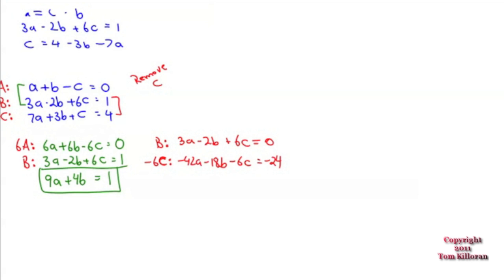Now do the same for the bottom two. To get rid of c, we'll leave B alone and multiply C by negative 6. That gives B as is: 3a minus 2b plus 6c equals 1, and negative 6 times C. Adding them gives negative 39a minus 20b equals negative 23.